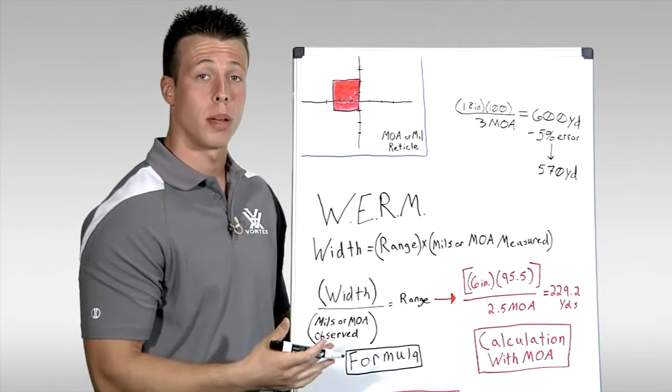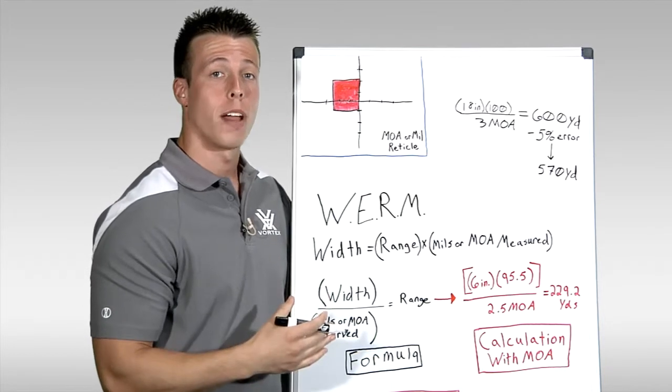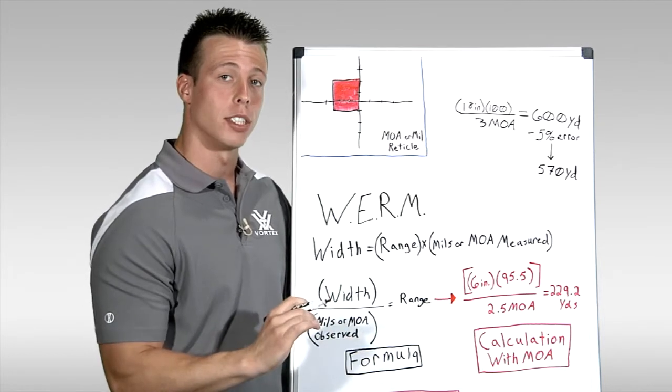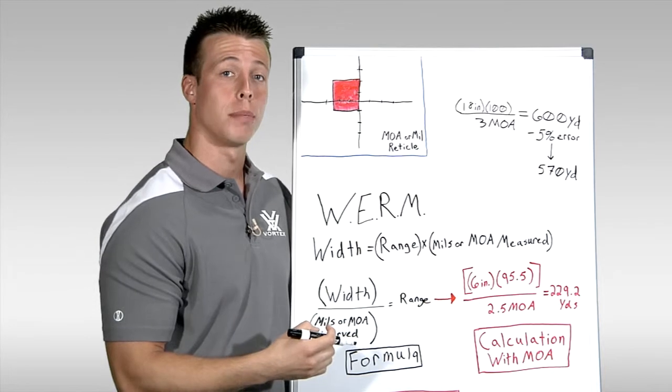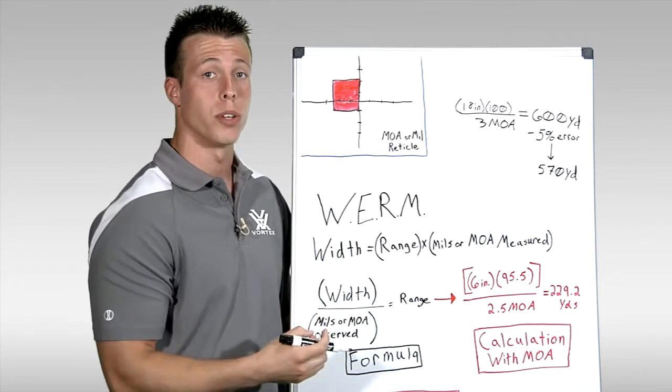Now be careful of those subtensions. If you're using a second focal plane rifle scope, you will need to have the rifle scope set to the proper magnification setting in order to ensure that your subtensions are correct. If the subtensions are not correct, this will skew your range estimation.